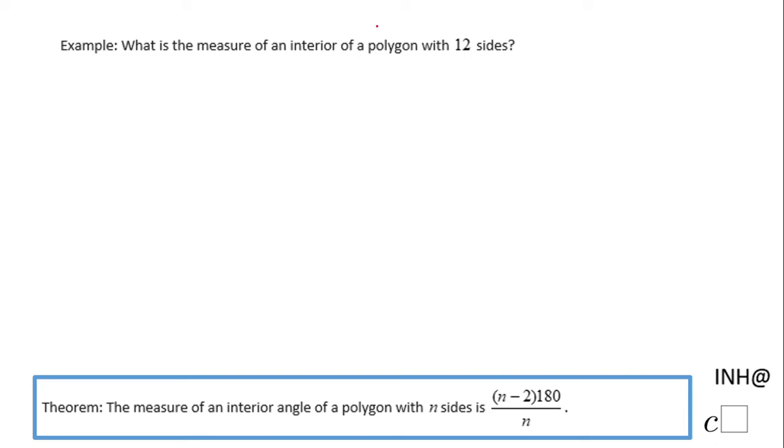Welcome or welcome back to I Need Help at Cisco. In this example, we need to find the measure of an interior angle of a regular polygon. We should have a regular polygon; otherwise, we cannot do this problem.